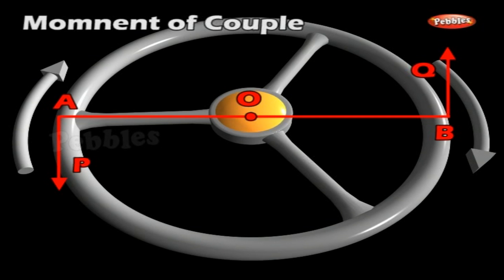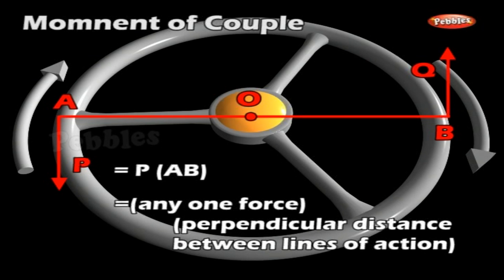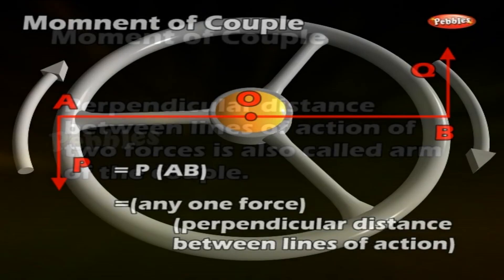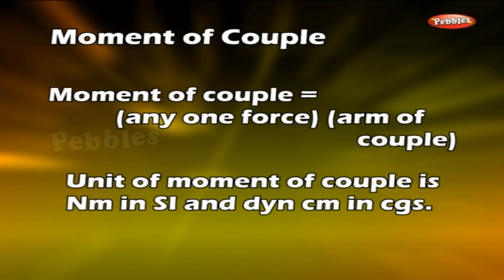Therefore, the rotational effect of the couple, or moment of couple, is equal to P × AO + Q × OB, which equals P × (AO + OB). P is equal to any one force multiplied by the perpendicular distance between the lines of action. This perpendicular distance is also called the arm of the couple. Moment of couple = any one force × arm of couple.